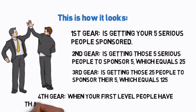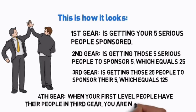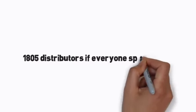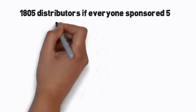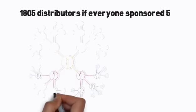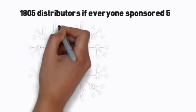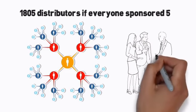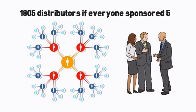Fourth gear, when your first level people have their people in third gear, you are now in fourth gear. This is the equivalent of 1,805 distributors if everyone sponsored five. Notice in fourth gear how smooth your ride is? By this time, you have embedded leadership and the momentum created couldn't be stopped even if you tried. This will take you to financial freedom.